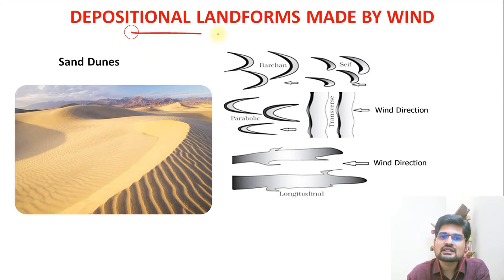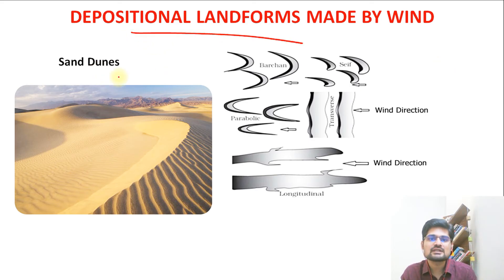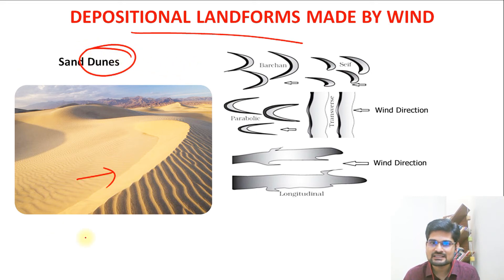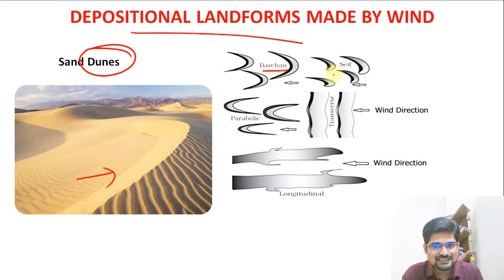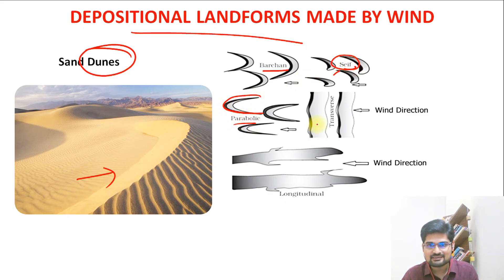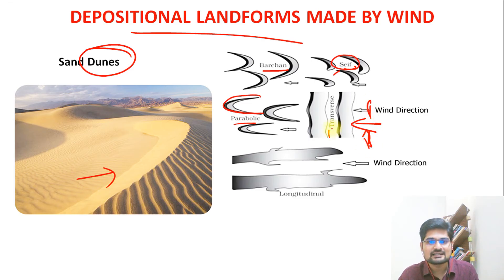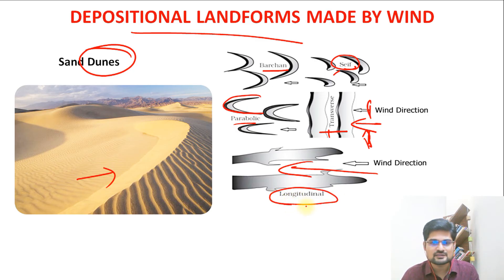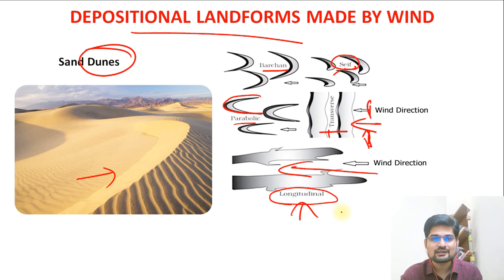Turning to depositional landforms, when wind deposits material it forms sand dunes. Various kinds of sand dunes include: Barchan (crescent shape), Seif Dune (semi-crescent), Parabolic Dune (parabola shape), Transverse Dune (deposition lateral to wind direction), and Longitudinal Dunes (deposition along the direction of wind). These are the main depositional features formed by wind.